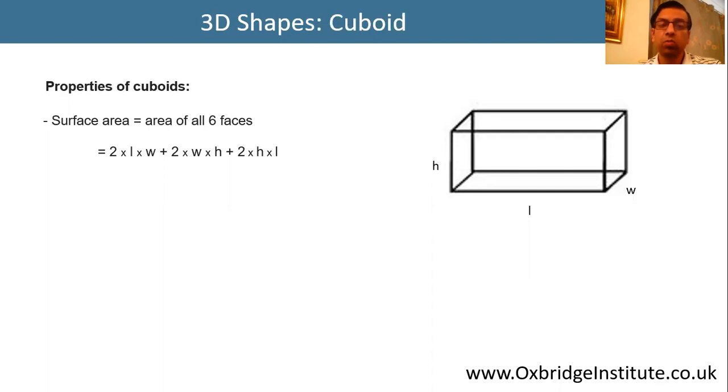Plus 2 into W into H, which is the surface area of the side faces. And 2 into H into L, which is the area of the front and the back of the cuboid.